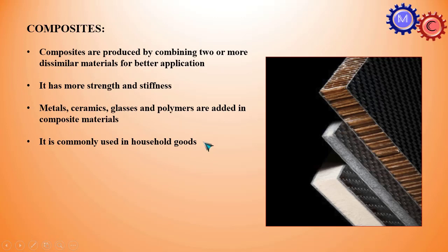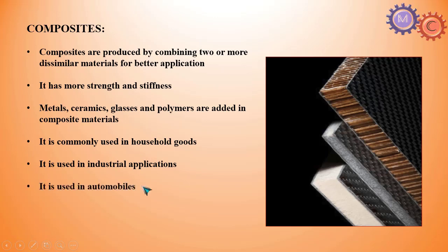Composites are commonly used in household goods and industrial applications. It is not normal plastic — it is a composite. For example, bikes have composite footrests in the engine area. Some composites are used in automobiles. Fiber glass is used in four-wheeler front windshields — it is very safe, as ordinary glass would break and cause injury. Now we use upgraded composite materials.